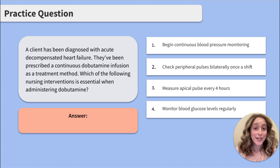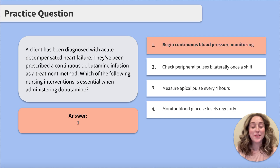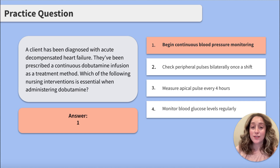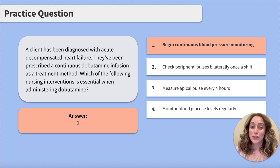So the correct answer choice is number one: begin continuous blood pressure monitoring. Most dobutamine infusions are titrated based on the client's blood pressure, so continuous blood pressure monitoring is essential.